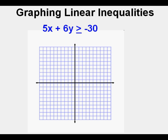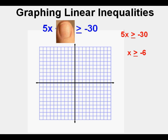Now let's look at this inequality: 5x plus 6y is greater than or equal to negative 30. We use the thumb to cover the y term, leaving 5x is greater than or equal to negative 30. We solve for x by dividing both sides by 5, getting x is greater than or equal to negative 6. We mark the x-intercept on the x-axis at negative 6.